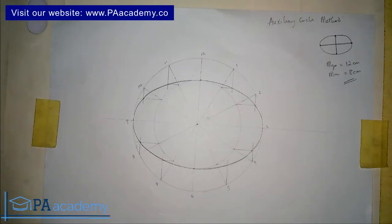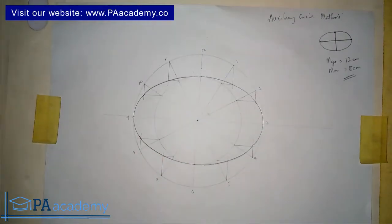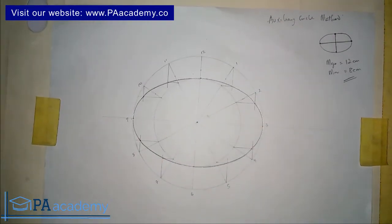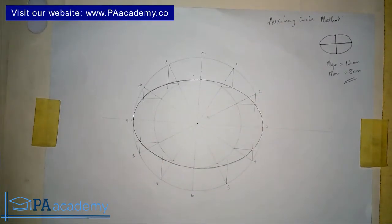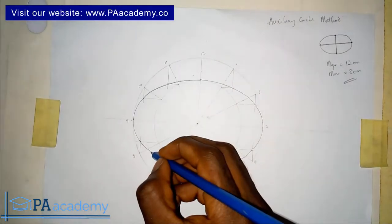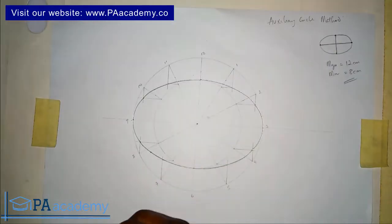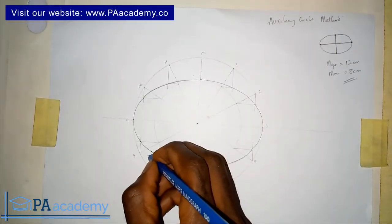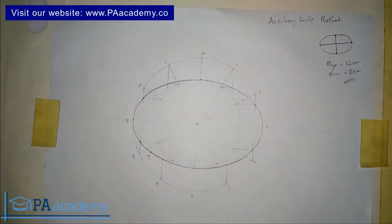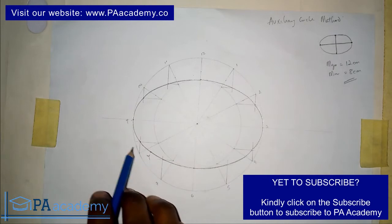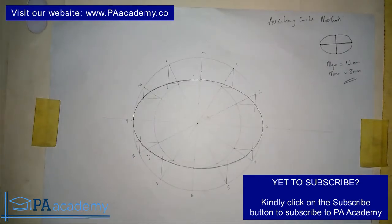Welcome to PA Academy. In this video I'm going to be taking you step by step on how to draw a tangent or a normal to an ellipse from a given point. We have an ellipse here, and if you are asked to draw a tangent from a given point — let's pick a point and call it point Y — this is how we go about it.